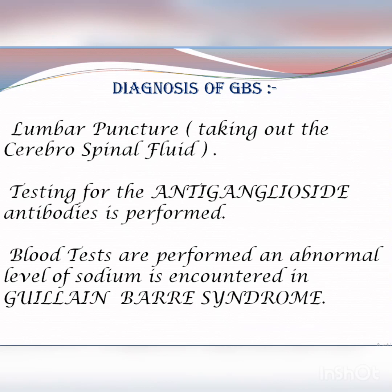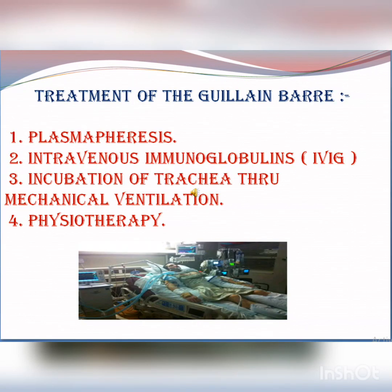During the treatment of Guillain-Barré syndrome, plasmapheresis is usually performed. Plasmapheresis means the removal of plasma from the blood without taking out the red blood cells. Intravenous immunoglobulins are usually given, whereas intubation in the trachea is provided through mechanical ventilation. Moreover, in Guillain-Barré syndrome, physiotherapy is also preferred.